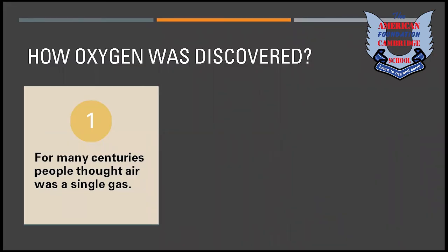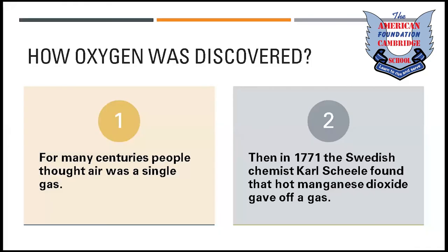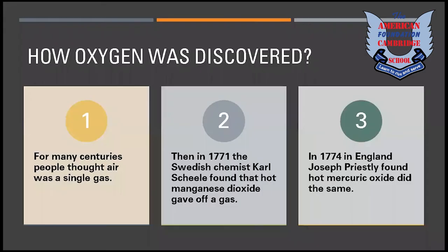How was oxygen discovered? For many centuries, people thought air was a single gas and no other gas existed in the environment. Then in 1771, the Swedish chemist Carl Scheele found that hot manganese dioxide gave off a gas, and the candle burned better in that gas than in air. He burned a candle in the presence of mercurial oxide and found that the candle burned better in this gas rather than in the presence of air.